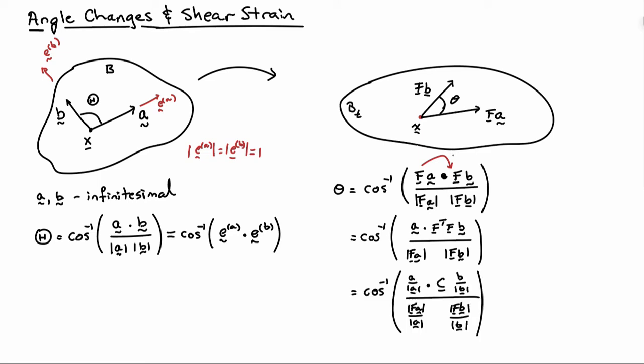Now, I can take the top and the bottom of the fraction inside our cosine argument. I'll divide it top and bottom by norm A and norm B. They cancel and I've written for F transpose F, I've written C, the right Cauchy green deformation tensor.